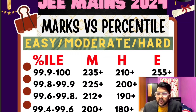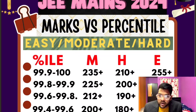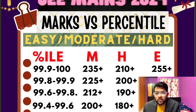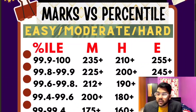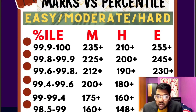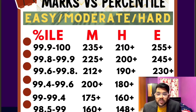For 99.8 to 99.9 percentile, you need 225+ marks for moderate/hard paper. For 99.6 percentile, 230+ marks are required for easy paper. For 99.4+ percentile, 220+ marks are required. For 99 percentile, 205+ marks — compare this with moderate (175) and hard (160). There is a significant marks difference for the same percentile across different paper types.